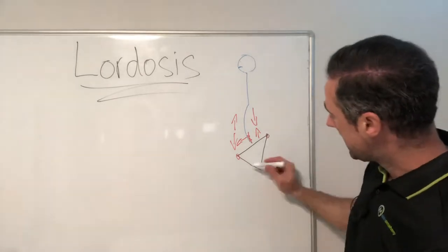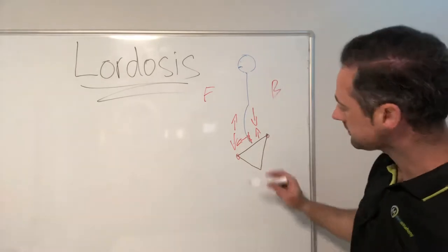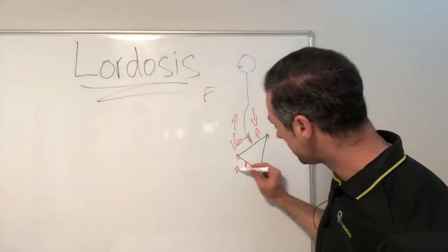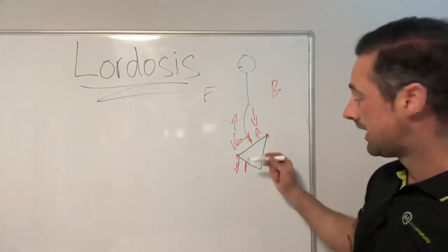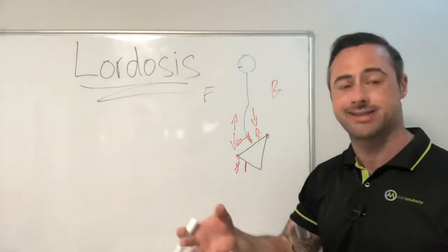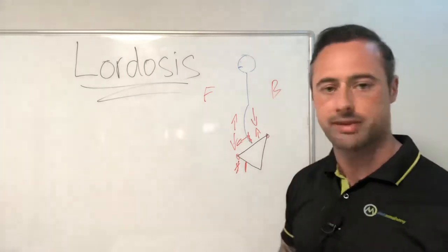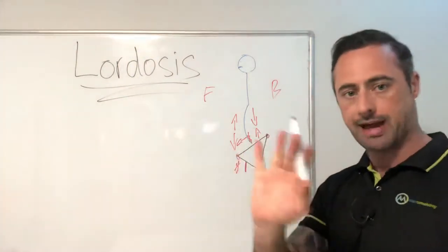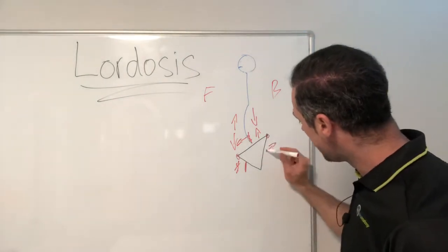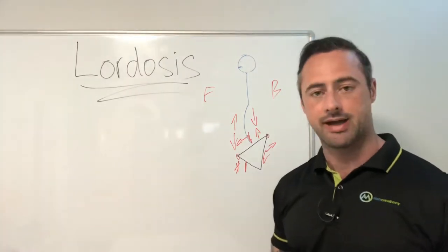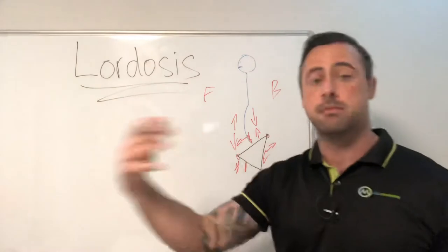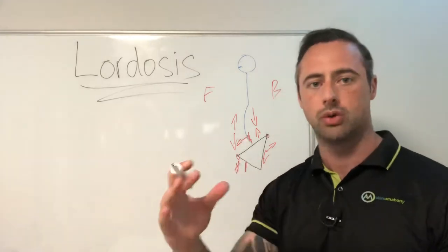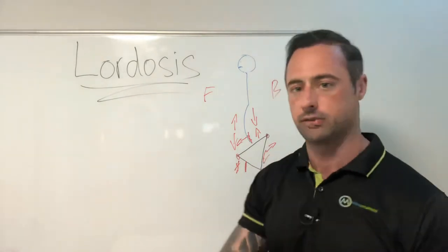All these muscles attach in and around different points of the pelvis, like a pulley system. If some become too tight, the pulley system pulls the pelvis out of alignment. Down at the front we have the hip flexors — shorter internal muscles — that get very short and very tight, contributing to this anterior pelvic tilt, which is another term for lordosis. Understanding this is important so you know why you're doing the exercises to fix it.